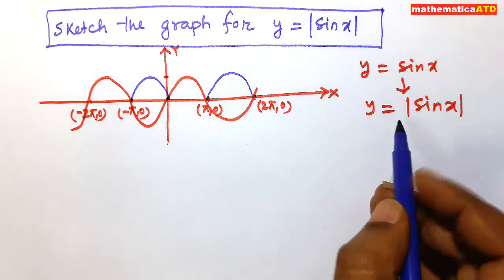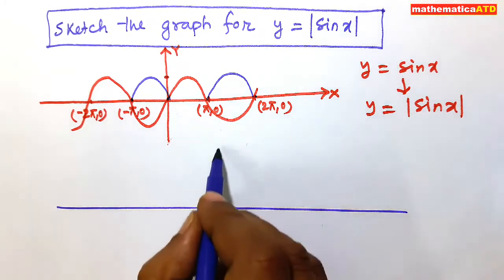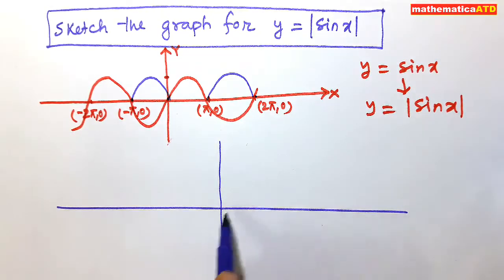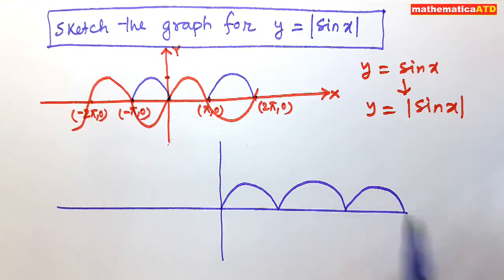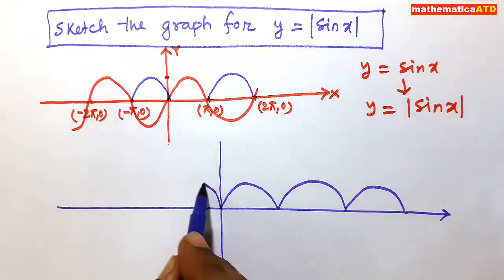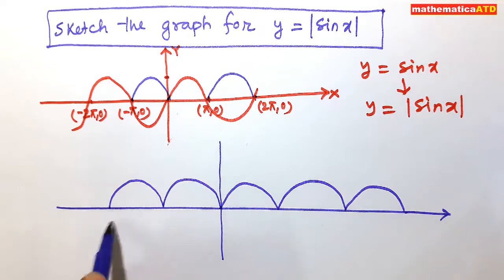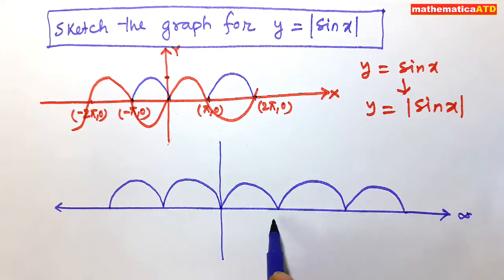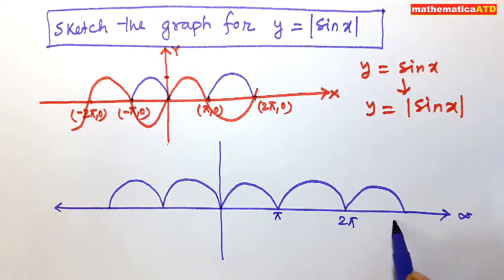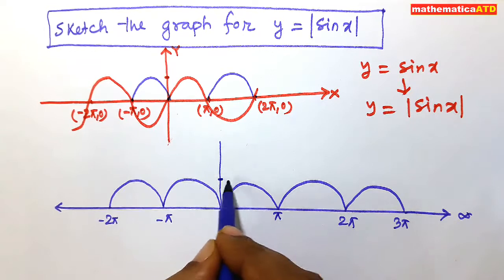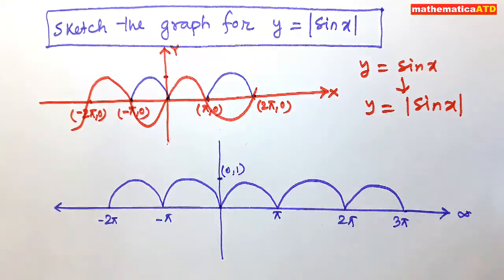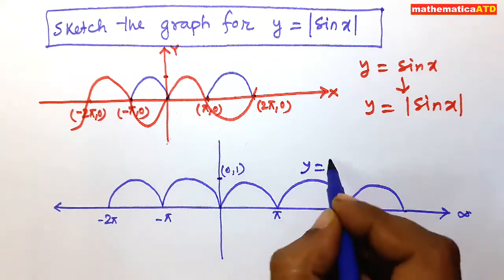Again I draw the curve for y is equal to modulus of sin x. The curve for modulus of sin x will be like this — a beautiful wave curve on the left side also, and so on. The points are: π, 2π, 3π and so on on the right side; on the left side, minus π, minus 2π and so on — all these are zeros. And this is (0,1). So this wave curve is for y is equal to modulus of sin x.